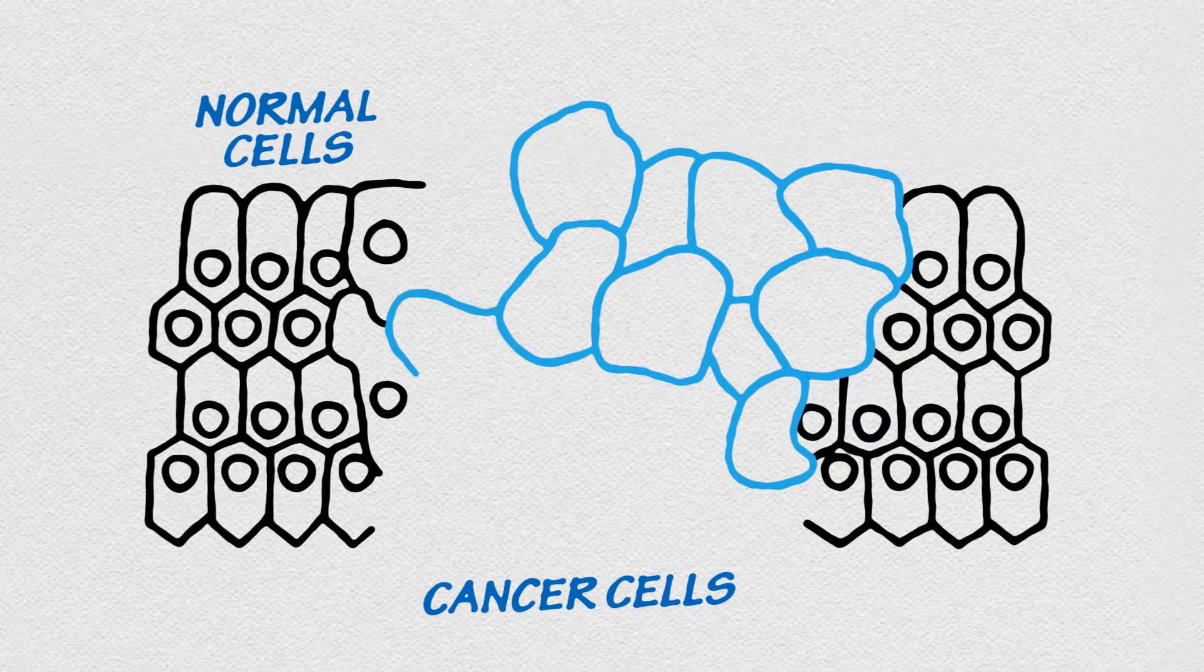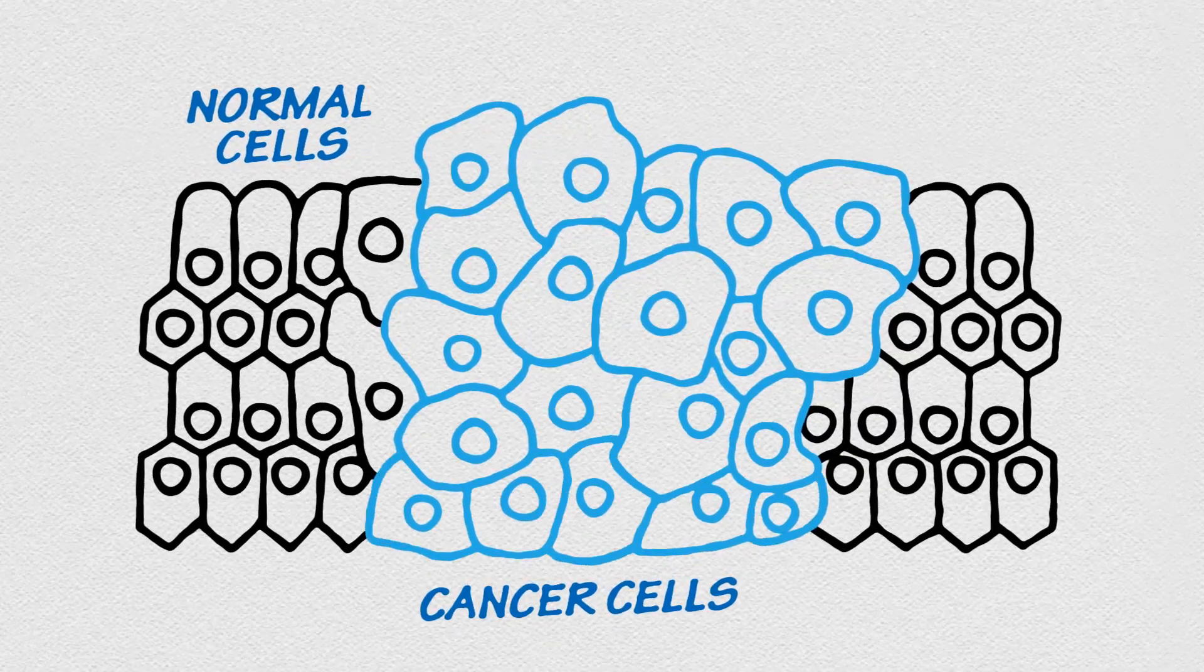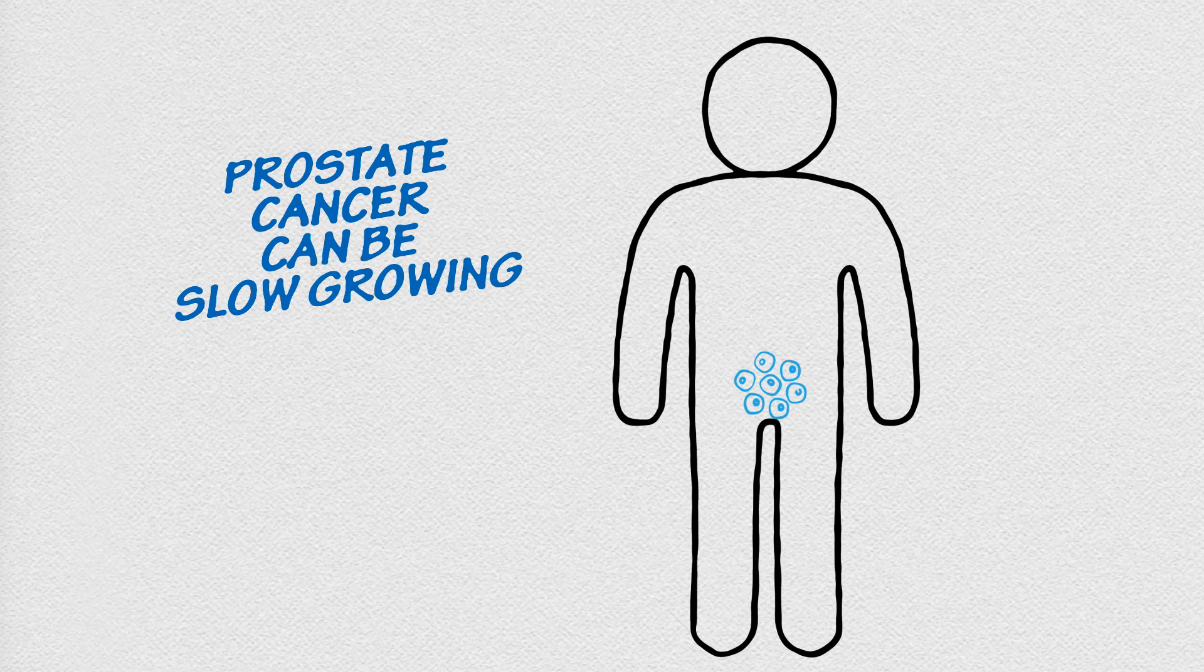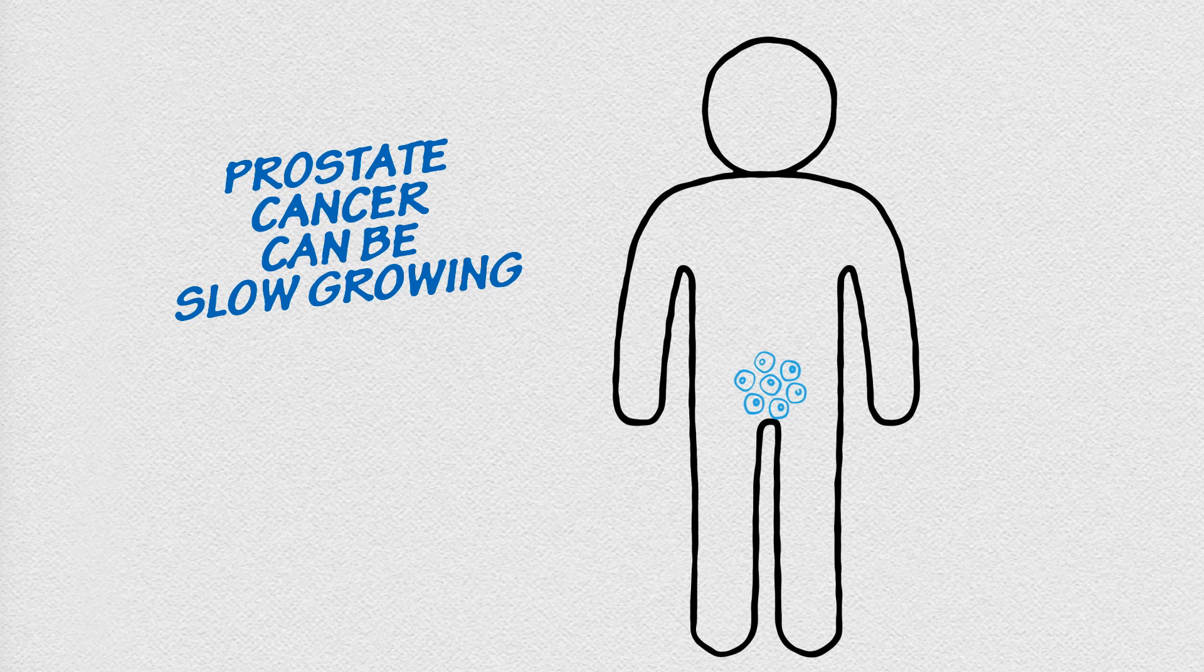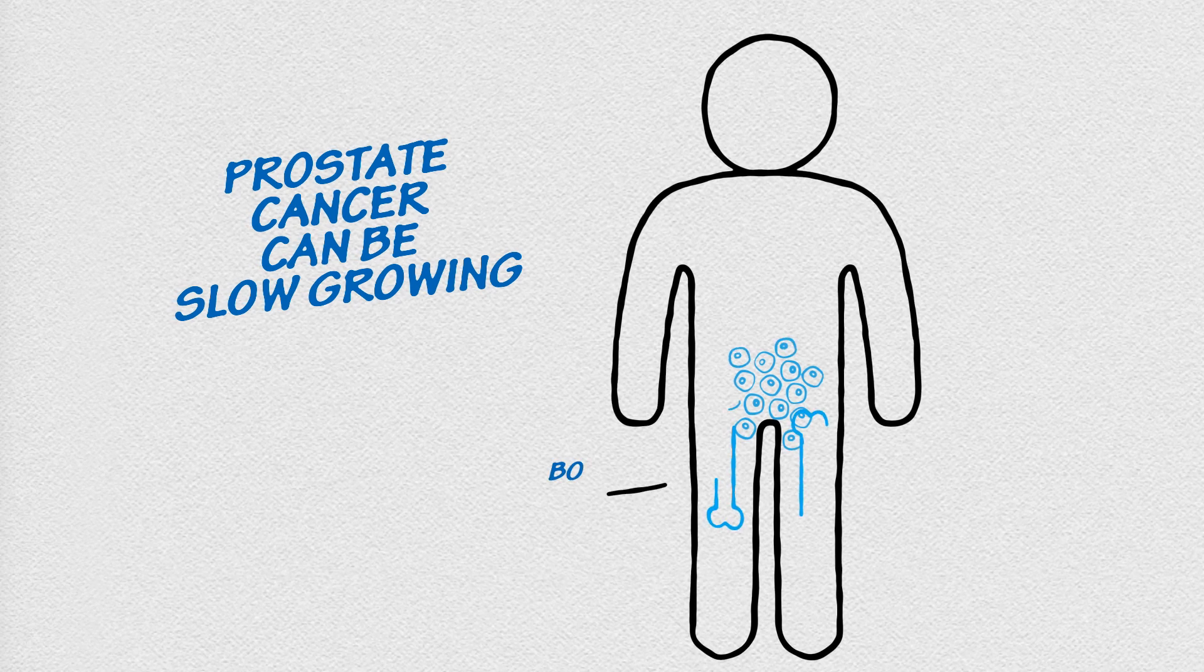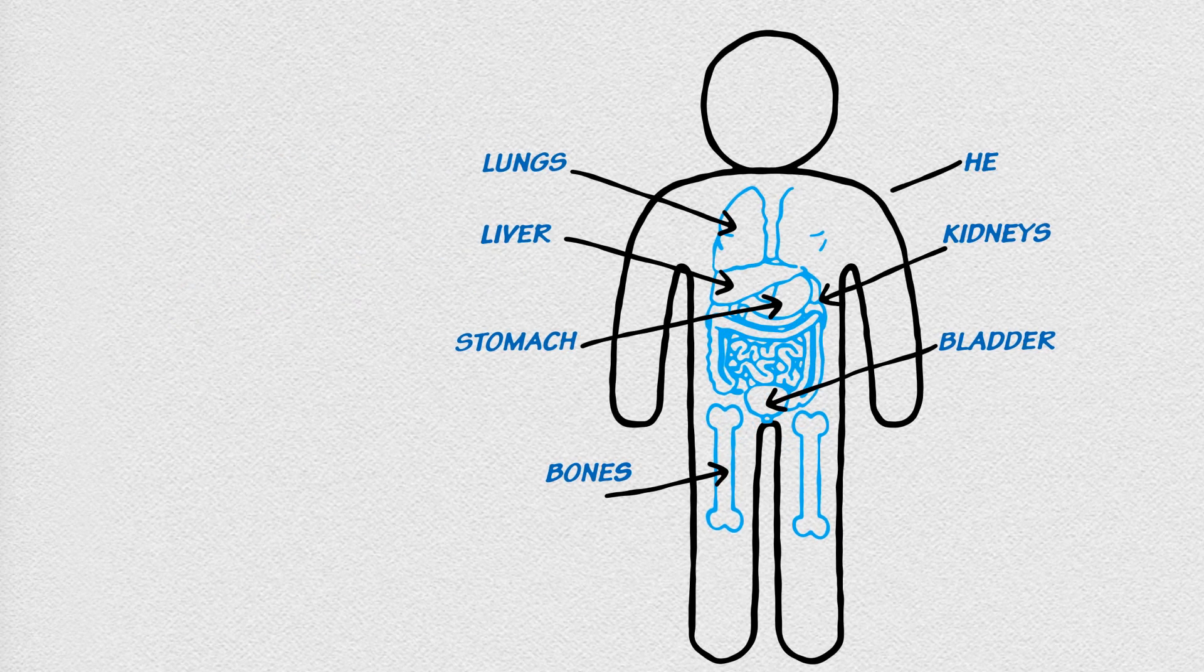It's when cells grow uncontrollably and can form tumors. They also have the potential to spread to other parts of your body. Prostate cancer can be slow growing, and some men may live for years without it ever being detected. But if the cancer spreads outside the prostate, it can invade other tissues and lymph nodes, and spread through the blood to your bones and organs, disrupting their functions.